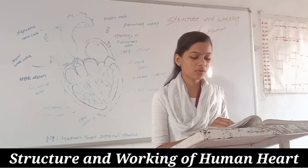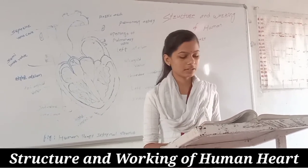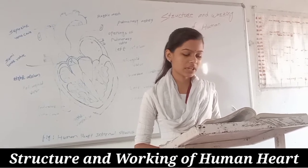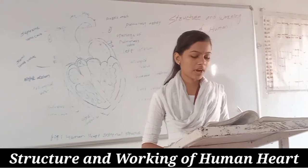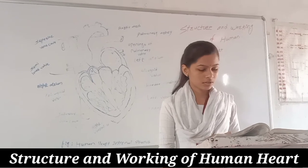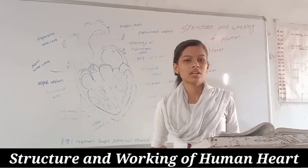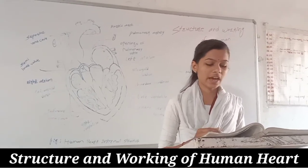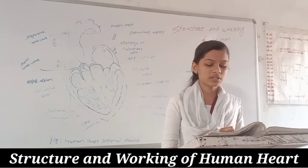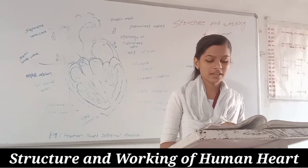The interventricular sulcus is present between the right and left ventricles. In these sulci are situated the coronary arteries and coronary veins. The coronary arteries supply oxygenated blood to the heart, while the coronary veins collect deoxygenated blood from the heart. The coronary veins join to form the coronary sinus, which opens into the right atrium.